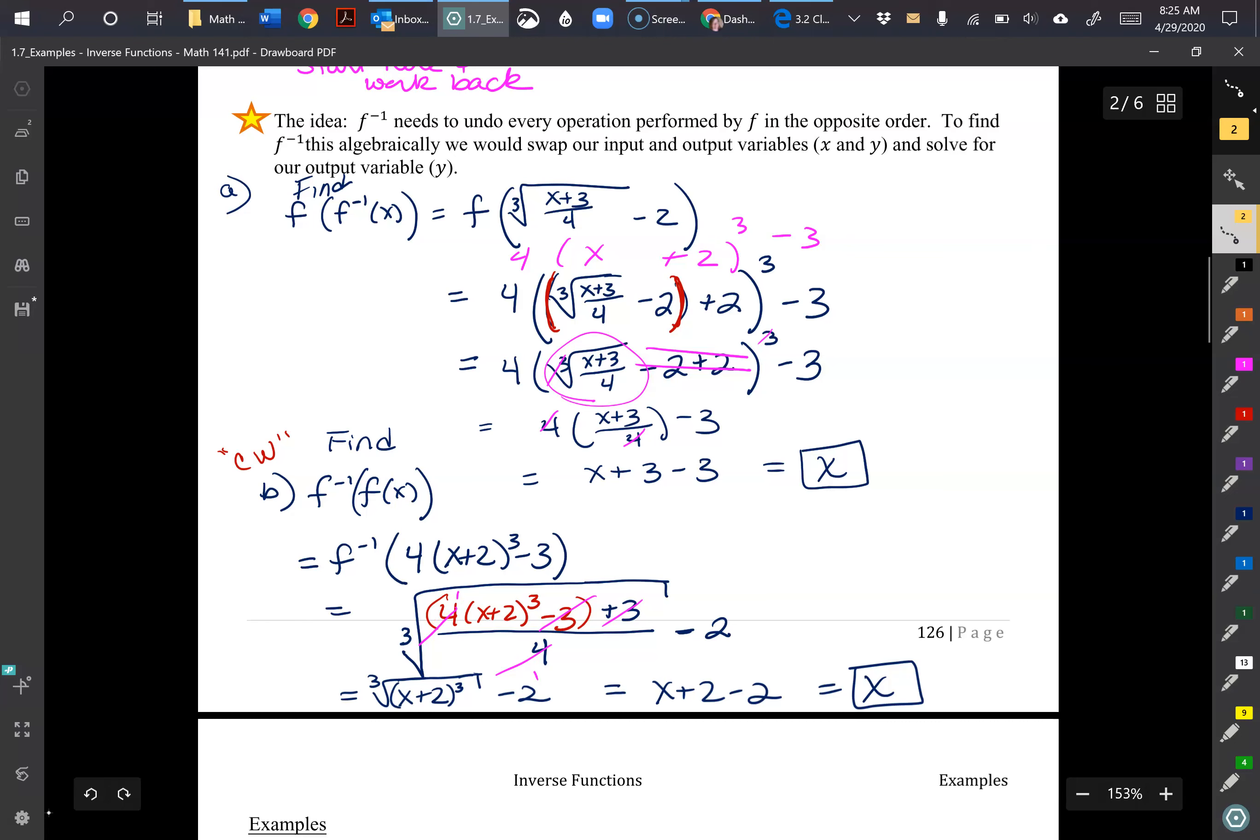And end up with cube root of X plus 2 cubed minus 2, which just gives me plain X plus 2, and then subtract the 2 and I get X. So that takes a little bit of playing with, some of these can get messy. So I hope you found that helpful and understand the process.